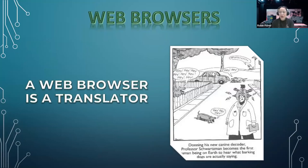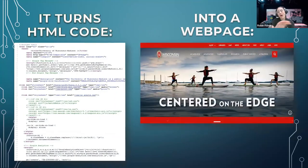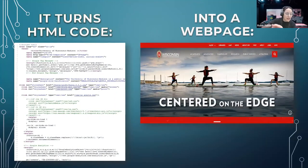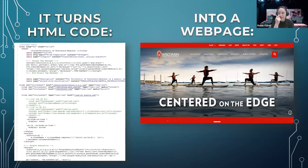On we go to web browsers. We all use these every day, but not many people know what they are — they're simply a translator. A web browser takes code — this is only 58 lines of code, but more like a thousand or so for a real website — and translates it into a web page. This is actually the beginning of the code for the main UW website. We wouldn't necessarily want to be presenting code to the rest of the world because it doesn't make much sense to most of us, but the website actually does. Web browsers are not perfect, just like human translators.